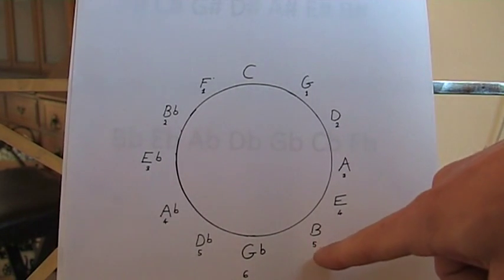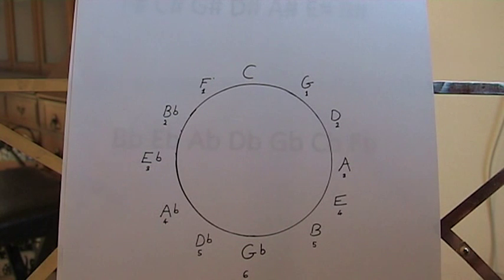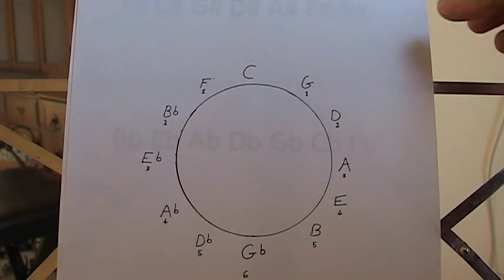So if you had five sharps on B, it would be F sharp, C sharp, G sharp, D sharp, A sharp.